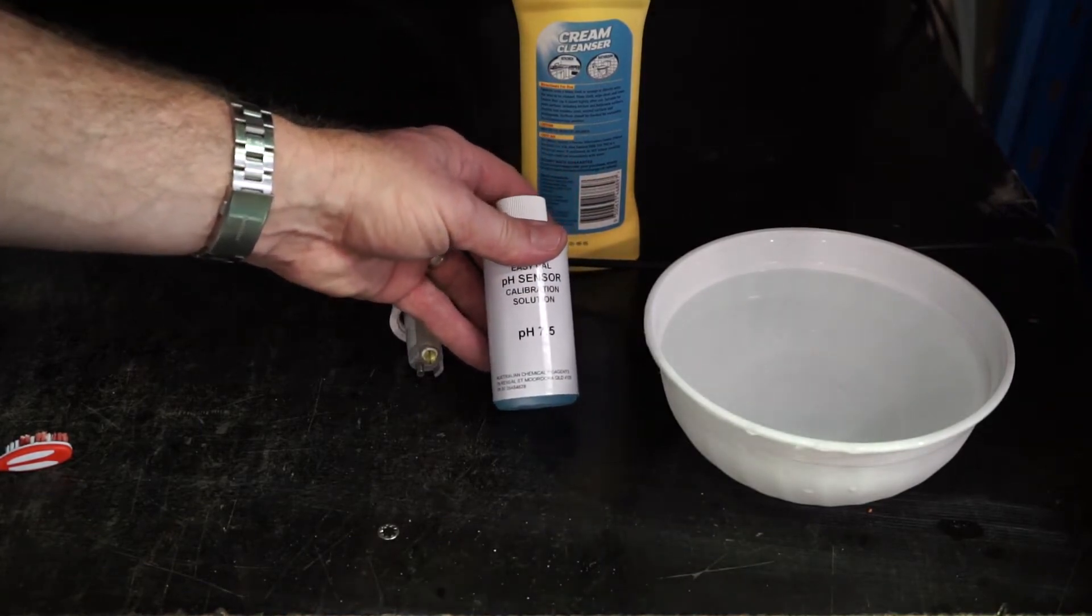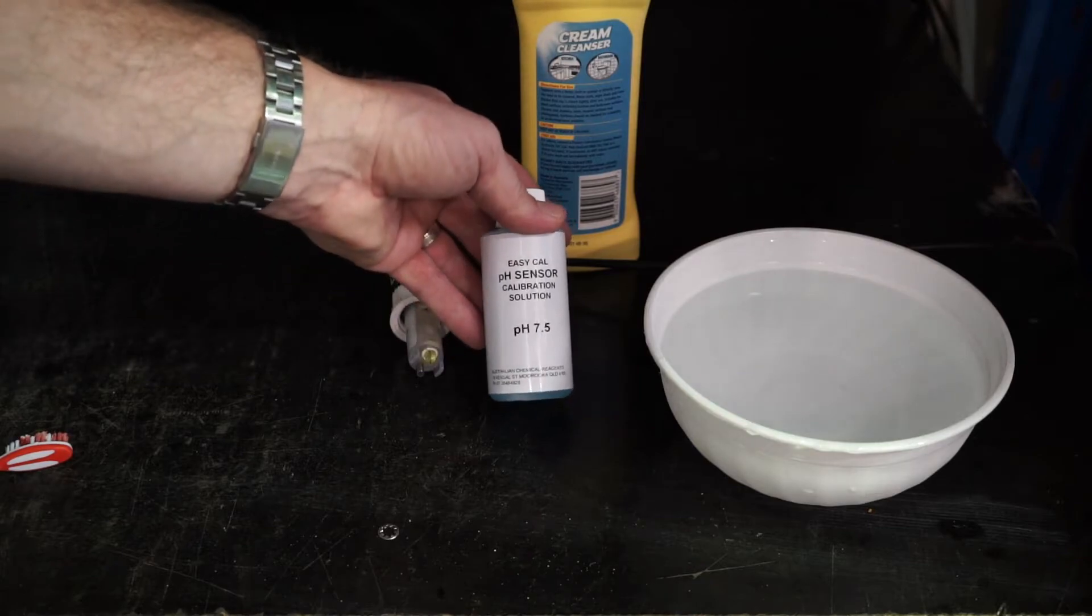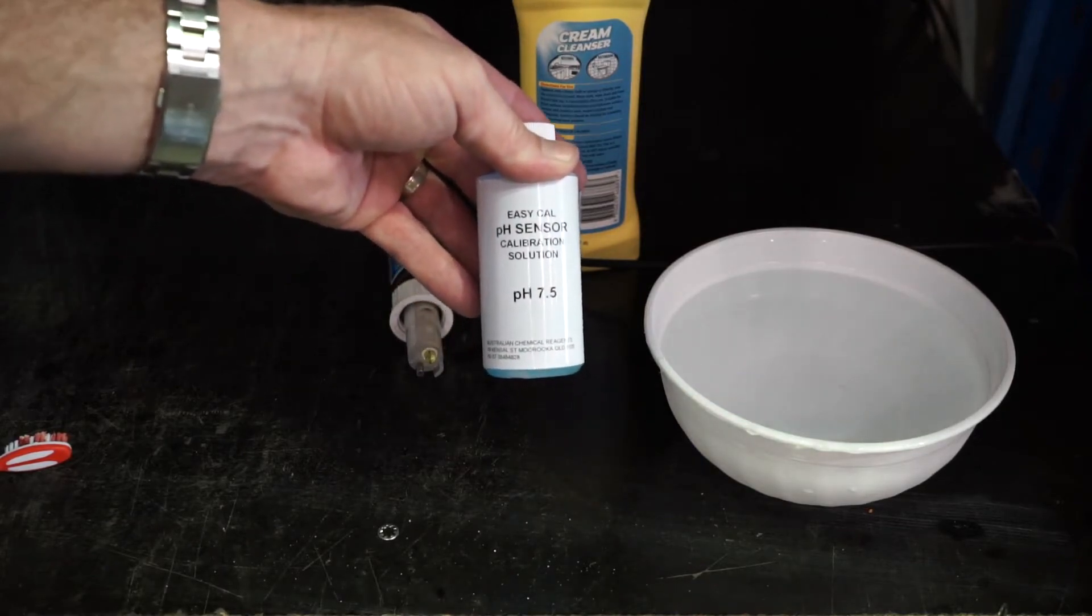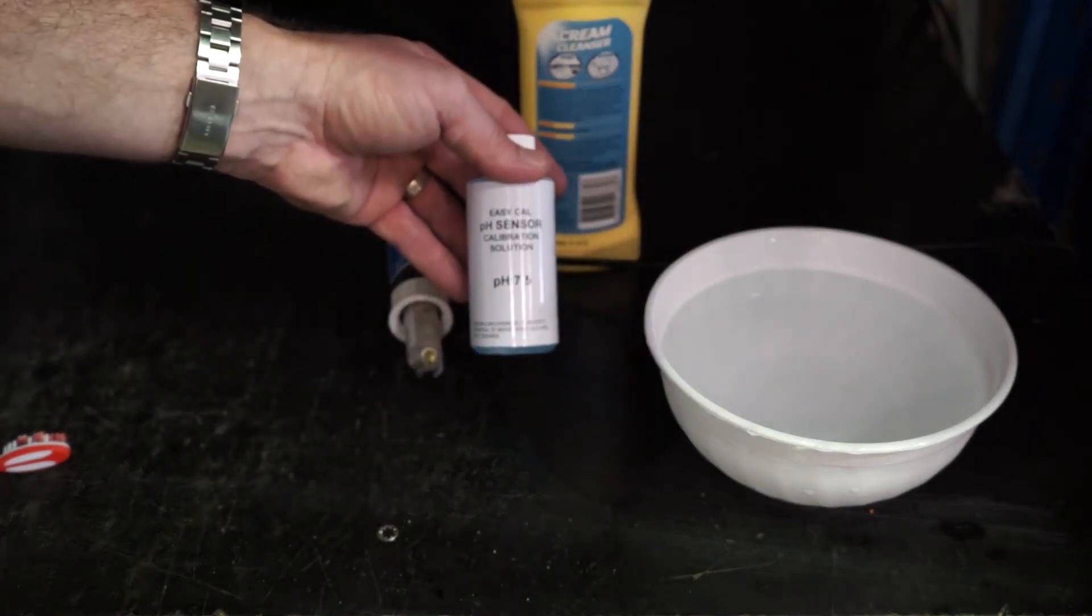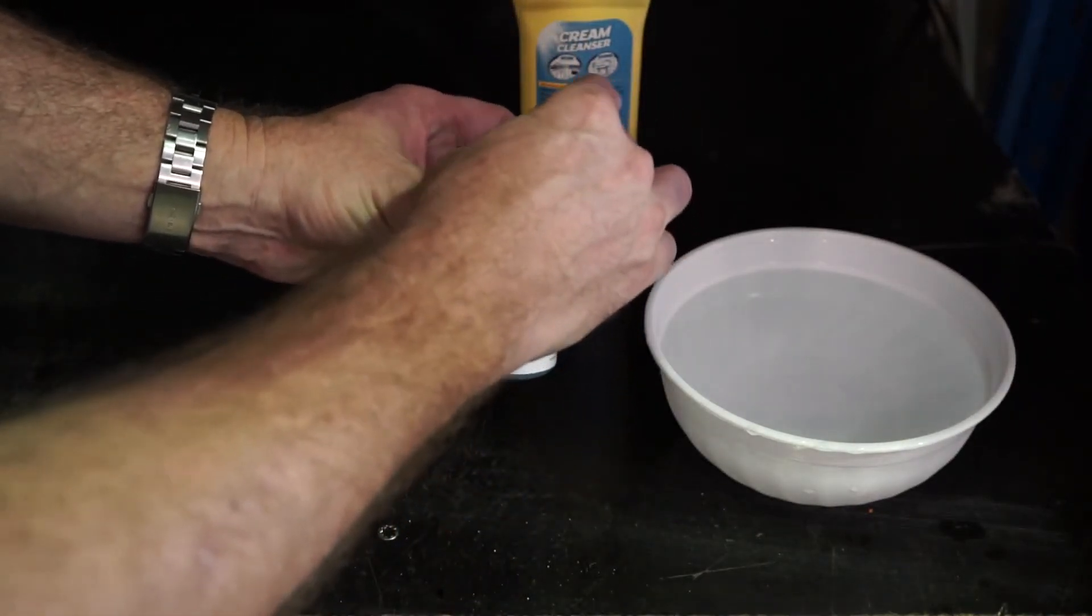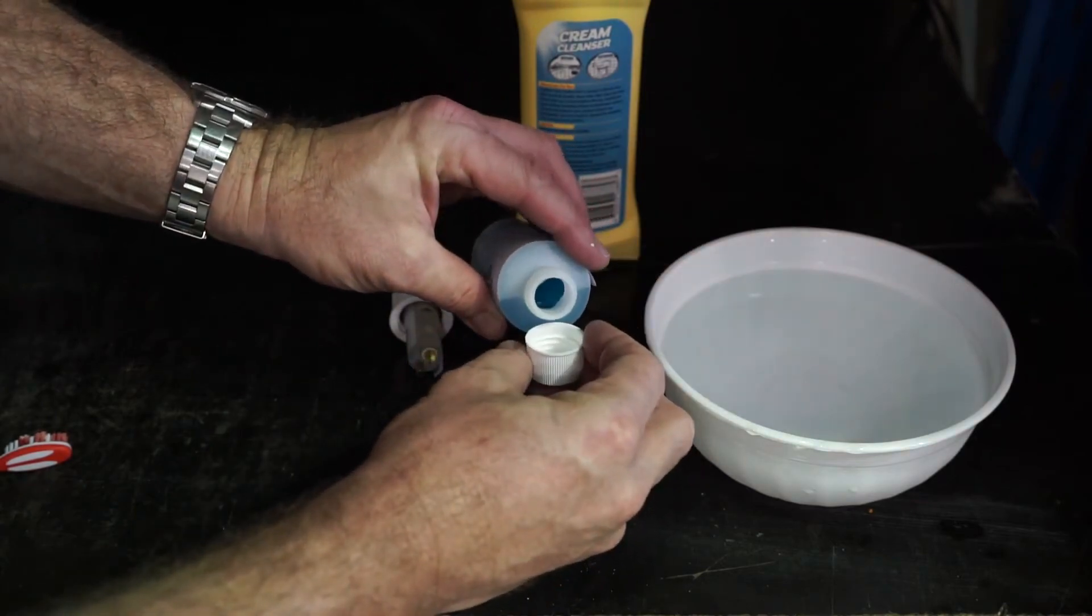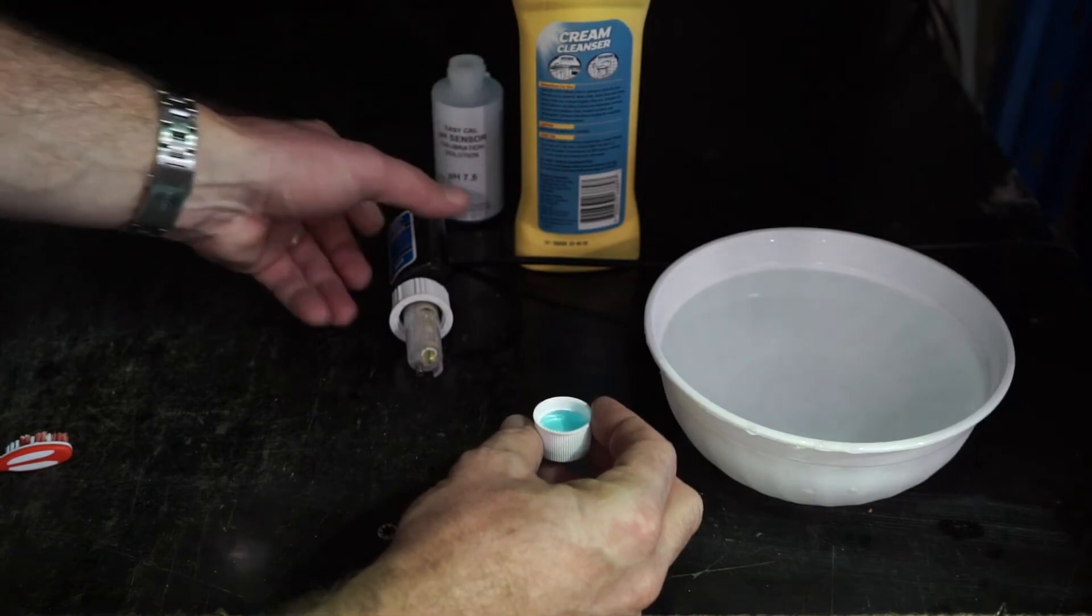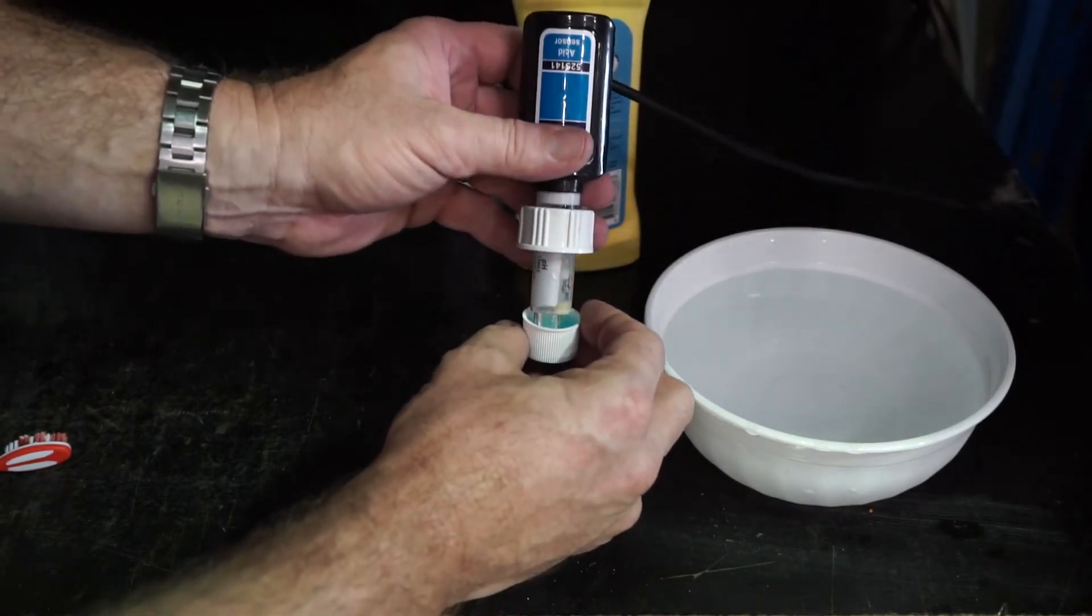Now we'll do a pH calibration. This is our pH calibration solution, factory set to a 7.5 value. All we need to do is pour a small amount into the top of the cap.